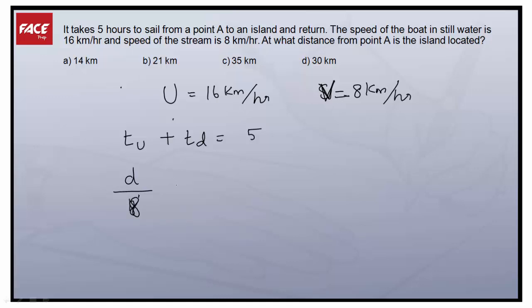And downstream speed which is given as D by 24 because 16 plus 8. We know upstream is U minus V so it is 16 minus 8 that's why we have put 8 here. And downstream speed it is U plus V right. So 16 plus 8 will be 24 which will be 5.